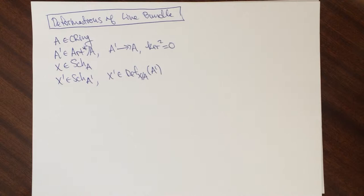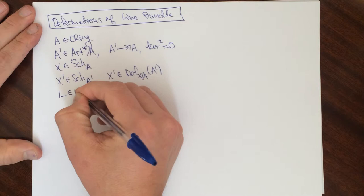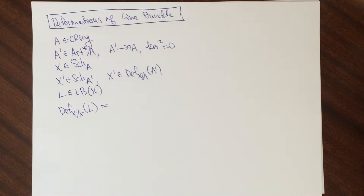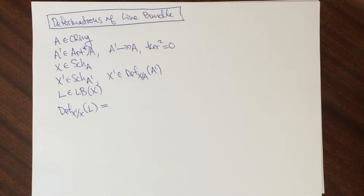So I want to introduce some things. First, I need to tell you what a deformation of a line bundle is. So we're going to have L, this is going to be the category of line bundles on X. And so a deformation from X to X prime of L, this is going to be a category again, but I'm going to write it as a set. I'm going to identify this with the objects.